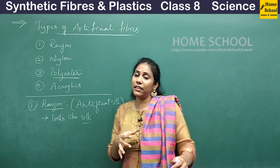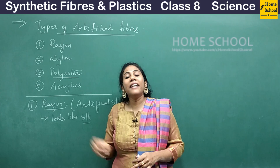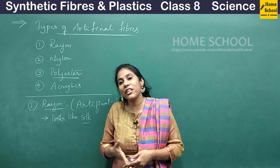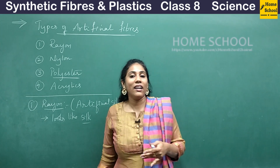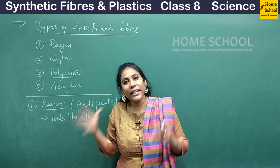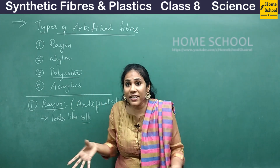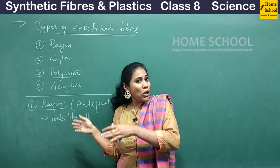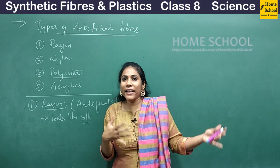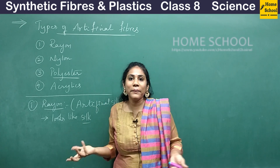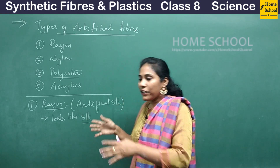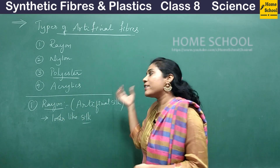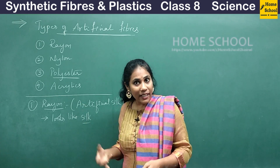We learned in class 7 that silk is obtained from silk worms, and that the manufacturing of silk was discovered in China. The process is very difficult — extracting silk from silk worms, culturing them, and doing lots of chemical processing. It takes a lot of time and involves high cost; buying a silk sari is not a common thing. So man started thinking of artificial silk and invented rayon, which looks just like silk, is soft like silk, and shines like silk.